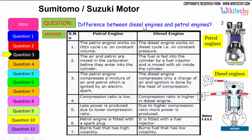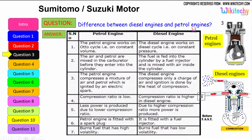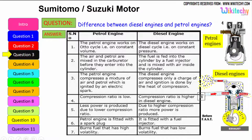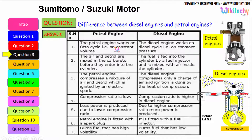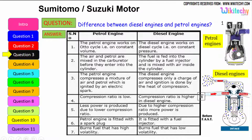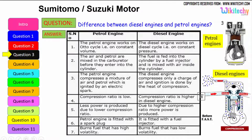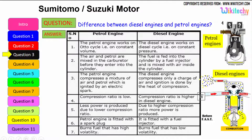Let us see the difference between the diesel engine and the petrol engine. The petrol engine works on the Otto cycle, therefore on constant volume. Whereas the diesel engine works on the diesel cycle, on constant pressure.